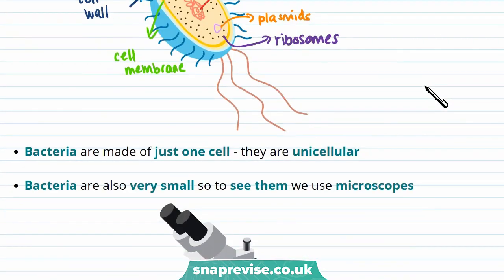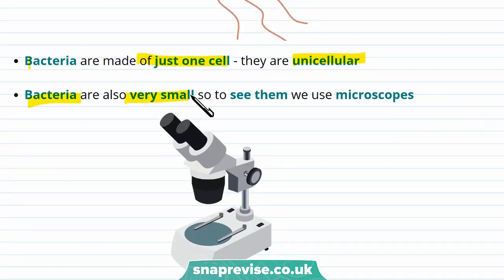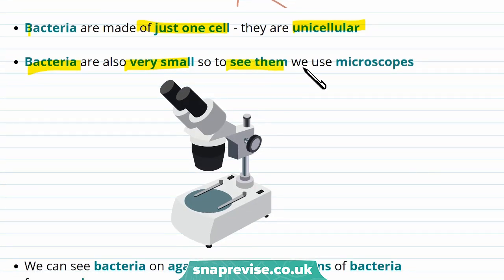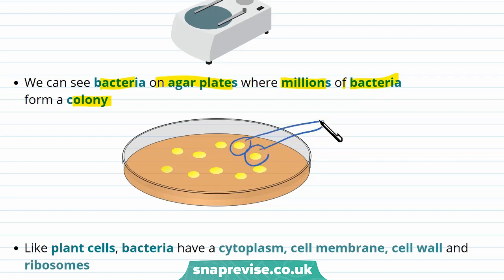Bacteria are made of just one cell — they're called unicellular, whereas plants and animals are multicellular organisms made up of lots of different cells. Bacteria are also very small, so to see single bacteria we use microscopes. We can also see bacteria on agar plates, where millions of bacteria form a colony — these yellow dots are made up of millions of bacteria.